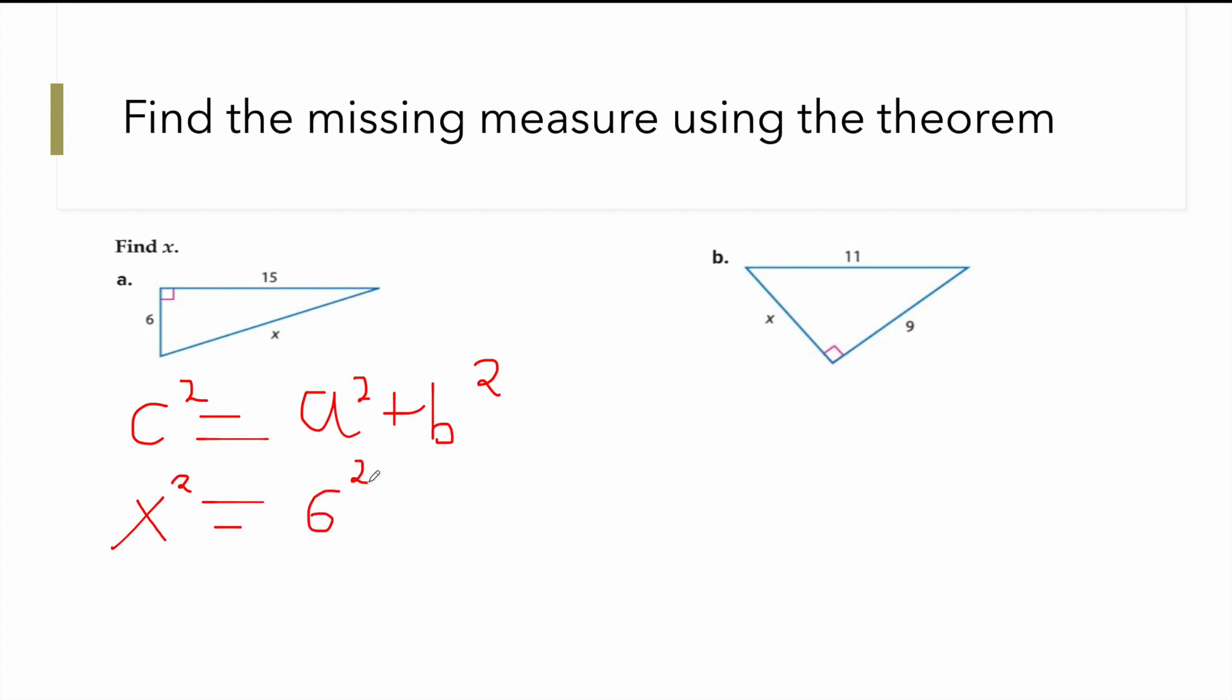It will be 6 squared plus 15 squared. When you add 16 squared plus 15 squared plus 6, you get 261. X squared, to remove the square we square root both sides. X will be equal to the square root of 261, which is 3 root 29. So we found X, X is 3 root 29.